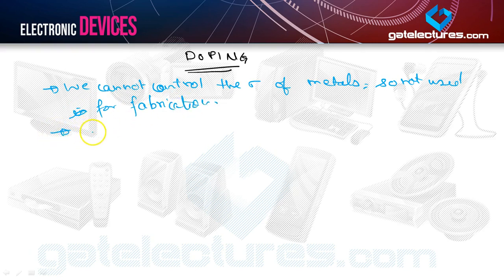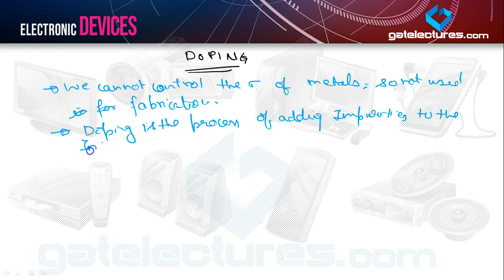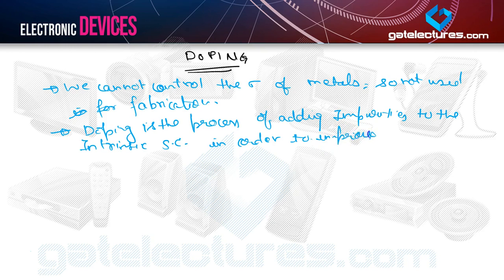For a semiconductor, we can control the conductivity. So what is doping? Doping is the process of adding impurities to the intrinsic semiconductor in order to improve its conductivity. That's the main reason.